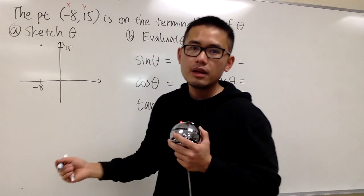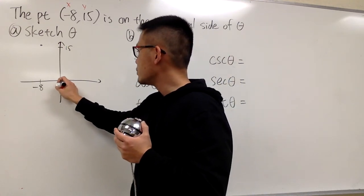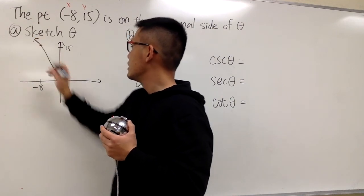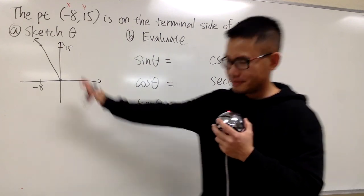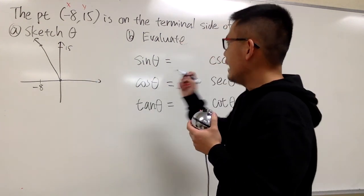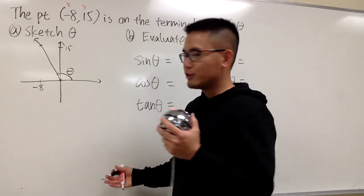Negative 8 comma 15. And for the terminal side, we are going to go from the origin, and then we draw a ray like this, and that's the terminal side. Anyways, the angle is going to be from here to here. That's the angle theta, and that's pretty much it.